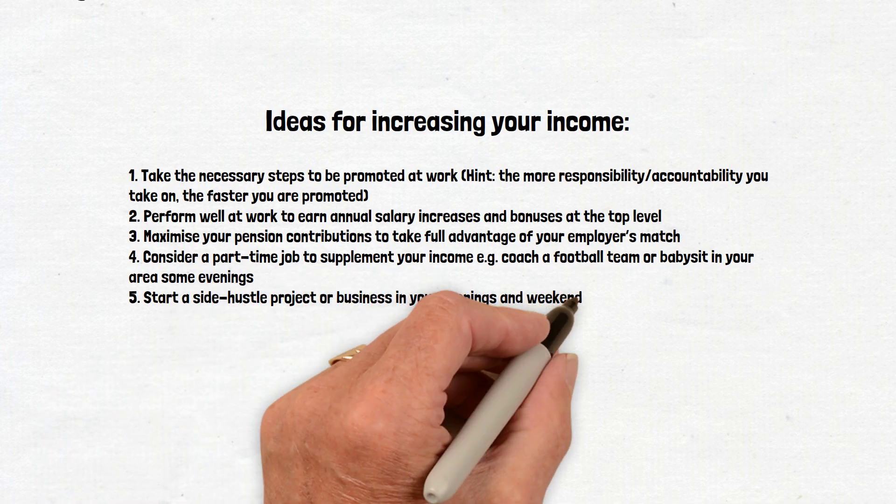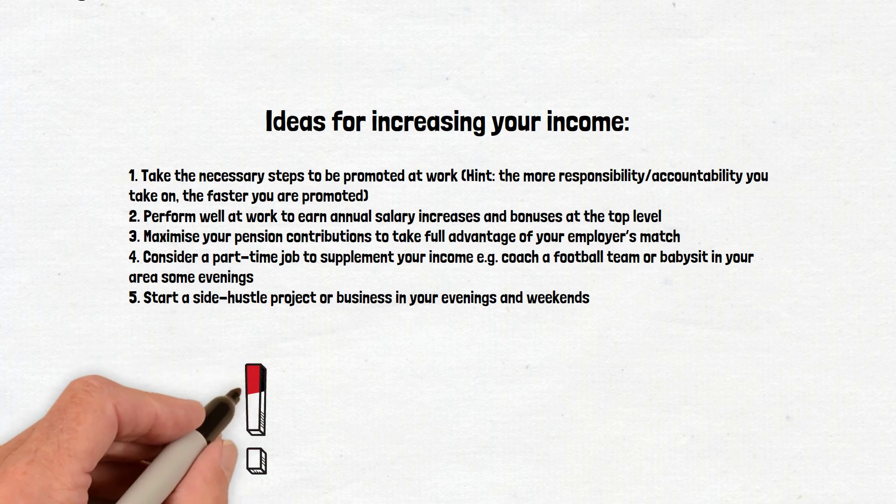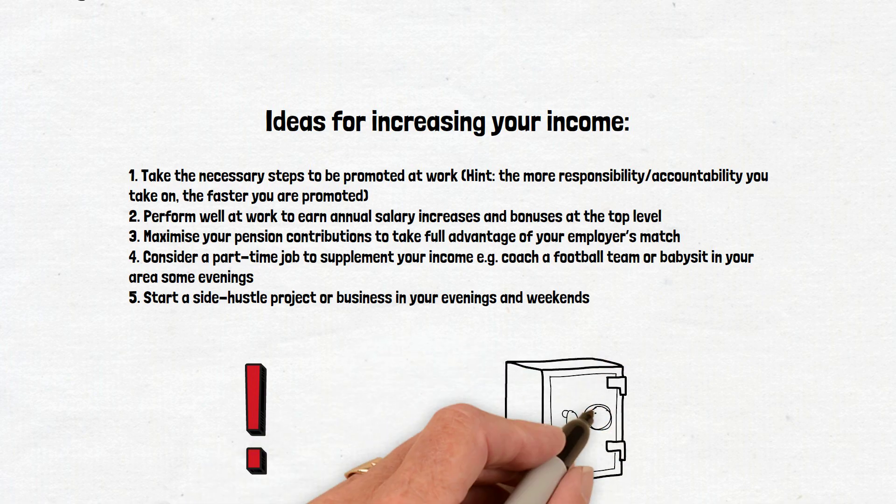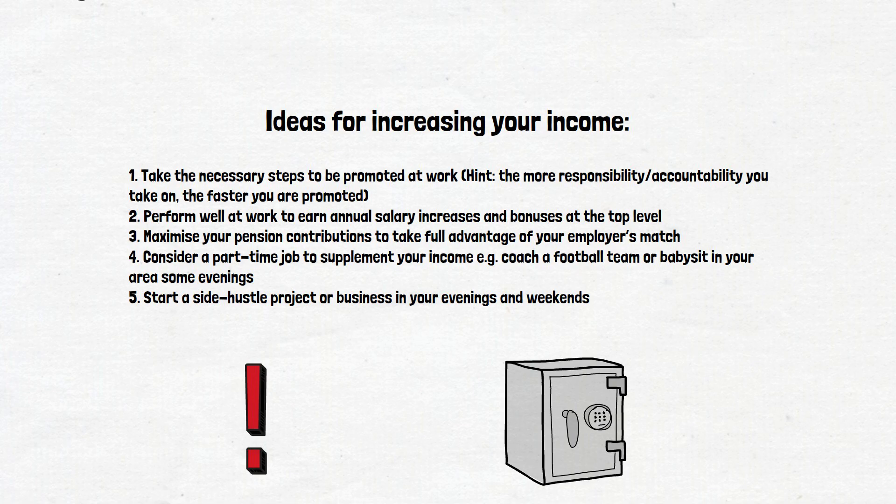Long story short, the more you can earn and the more you can cut your expenses, the faster you will be able to save $100,000. To speed up the process further, make sure your saved money is invested in income-producing assets like stocks. At this age, you are most able to invest in higher-risk asset classes, such as stocks.